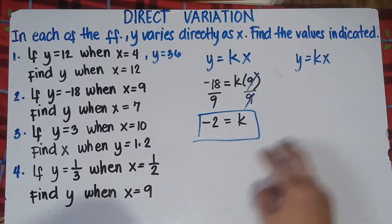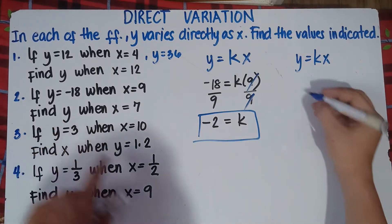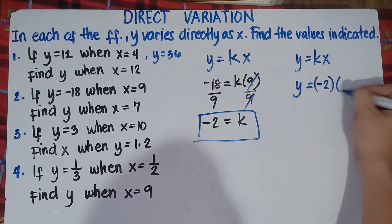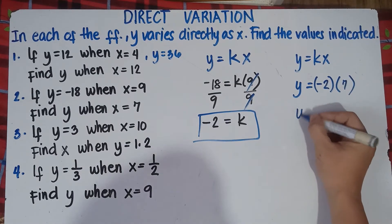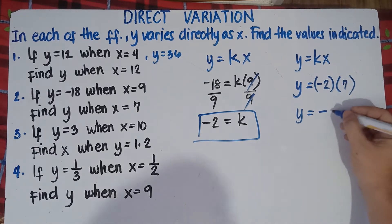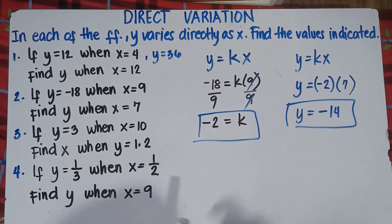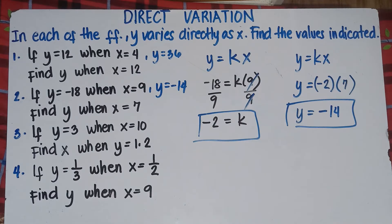Now once you get k, substitute k into the equation to find y when x equals 7. So y equals negative 2 times 7. Negative times positive — if you're multiplying unlike signs, the answer is always negative. So negative 2 times positive 7 is negative 14. That's your answer for number 2: y equals negative 14.